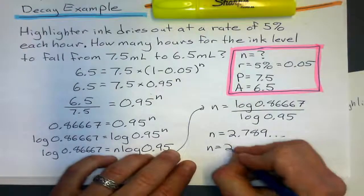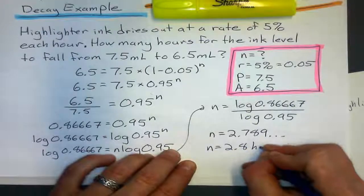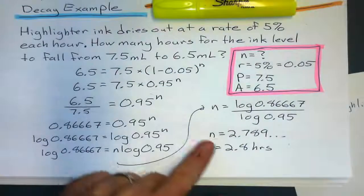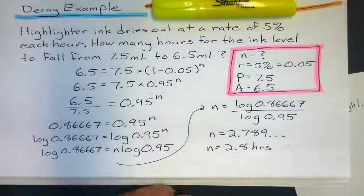I got about 2.789 something something something, which means in about 2.8 hours, that's how much the ink will go down. From 7.5 mils to 6.5 mils, using nothing but logarithms.